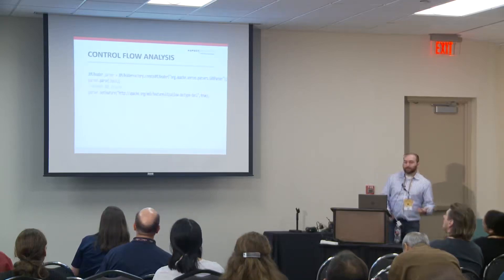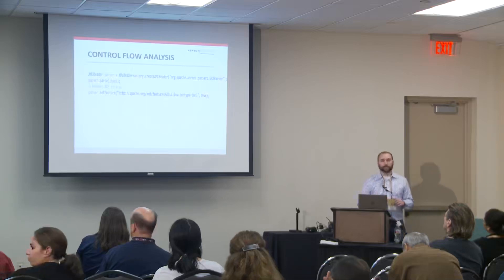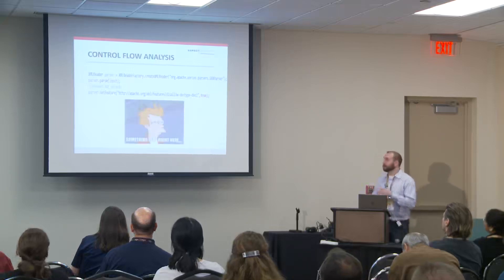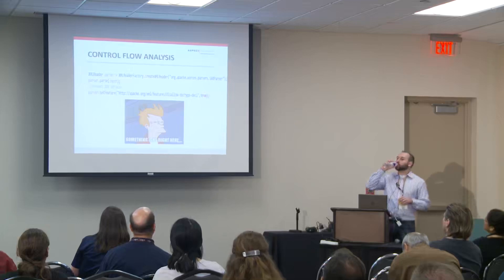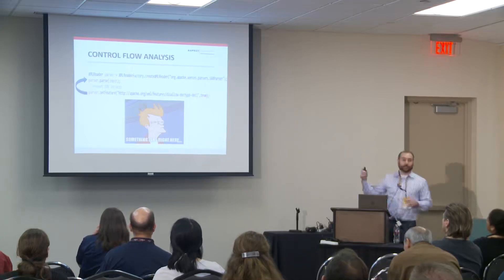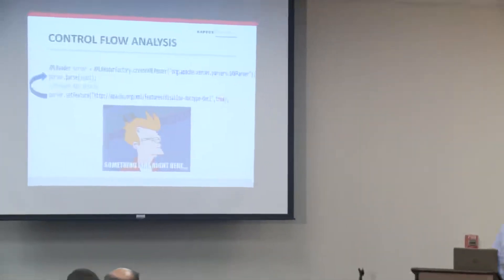Control flow analysis: here's an example of a small piece of code. We're creating an XML reader and going to parse some input. There's a comment from the developer saying 'this is to prevent XXE attacks.' What's wrong? You're parsing and then setting the feature — that's backwards. This will not protect you from XXE attacks. This is exactly the type of thing control flow analysis will find. It's like an order of operations — this needs to happen first, and then this. The classic example is always closing your database connection in the finally block.